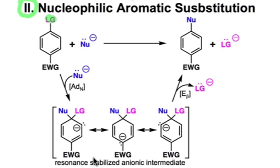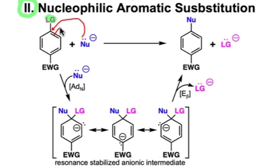If we look at the curved arrows, we're going to see that there's a nucleophile addition to a polarized π-bond. The polarized π-bond is polarized by the electron-withdrawing group on the benzene ring. We can continue to move the π-system electrons and place the negative charge on this carbon to produce this resonance contributor shown here.